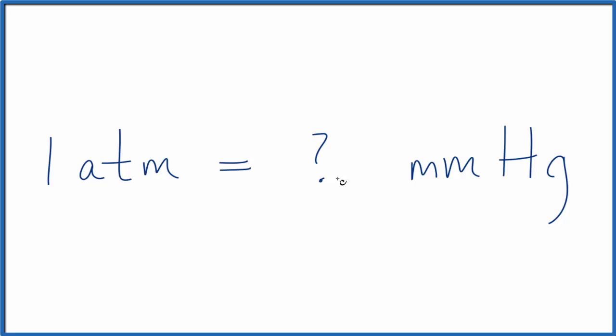One atmosphere is 760 millimeters of mercury. In fact, that's our conversion factor. This isn't something you can just work out—you either memorize it or your teacher gives this to you on a test.